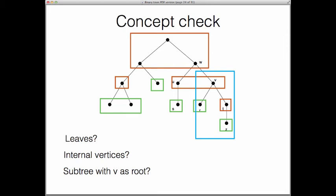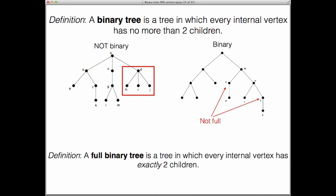So now we are finally ready to define what a binary tree is. A binary tree is simply a tree in which every internal vertex has no more than two children, hence the name binary. Since an internal vertex by definition has to have at least one child, otherwise it would be a leaf and not an internal vertex, that would mean that a binary tree is a tree in which every internal vertex has either one or two children but no more and no less.